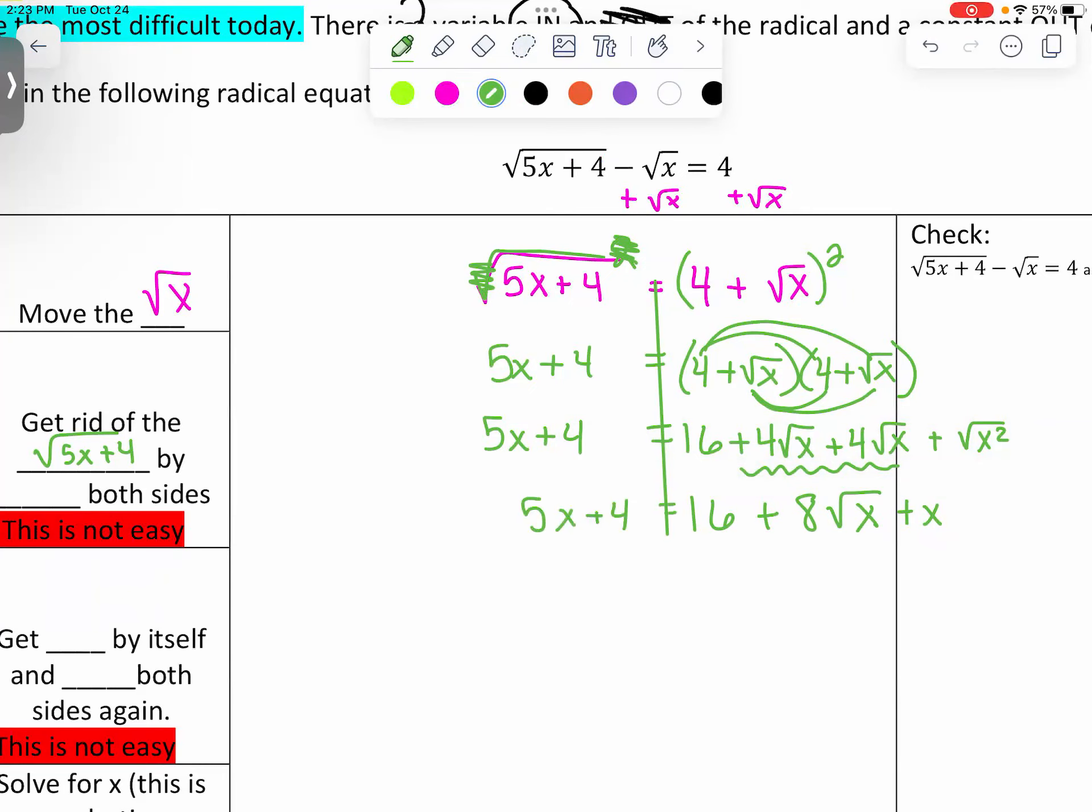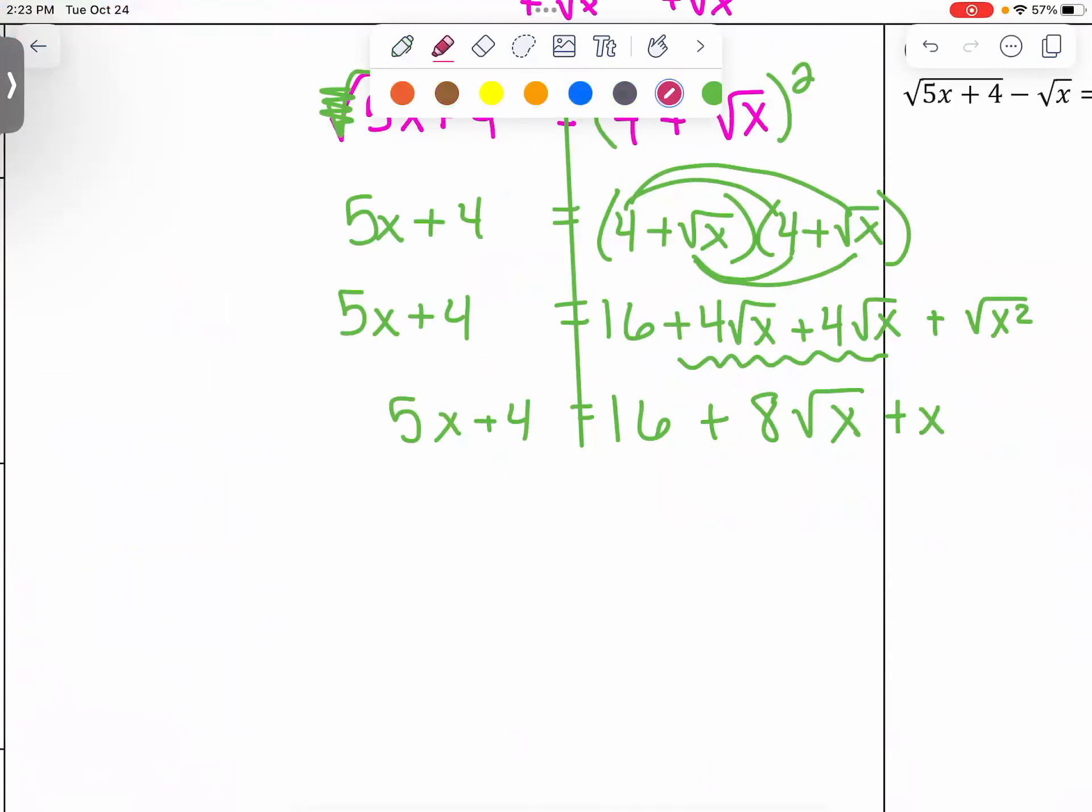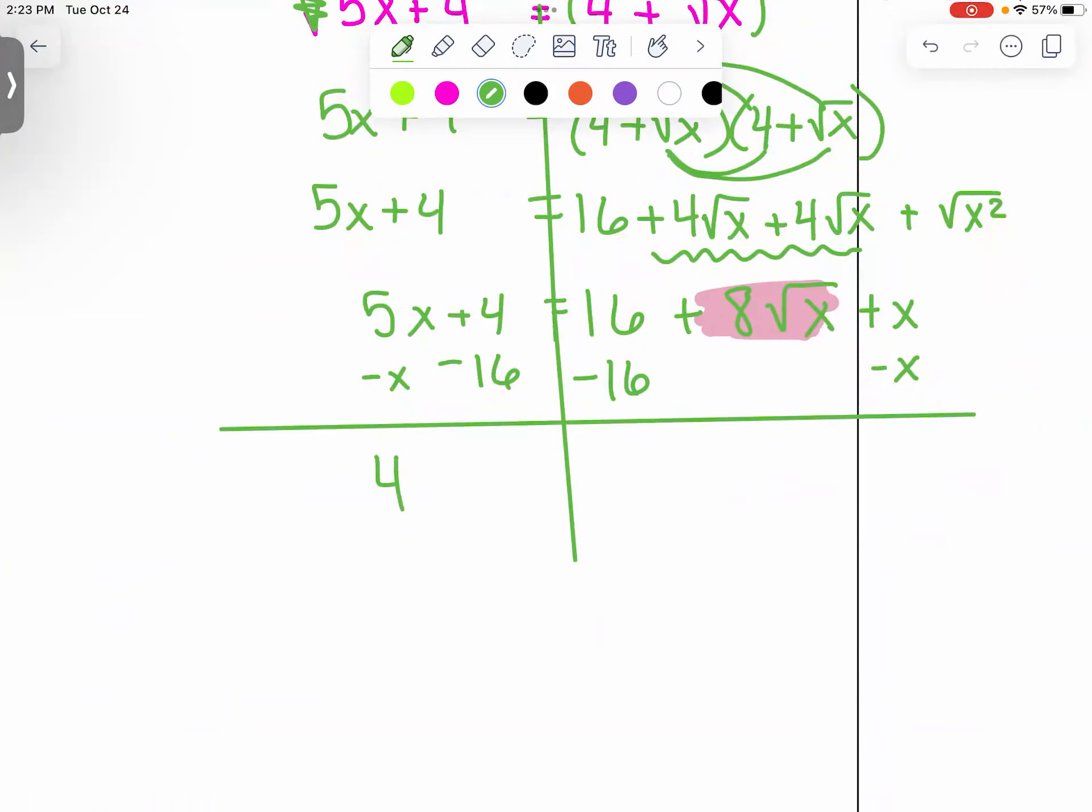And over here, this just keeps flopping down. We have to get this entire term by itself. So how do you move the 16? Negate. And how do you move that x? Negate it. Let's combine our like terms. Five x minus x makes four x. Four minus 16 makes negative 12. And then eight square roots of x pops down.